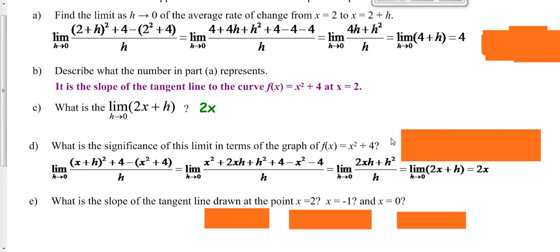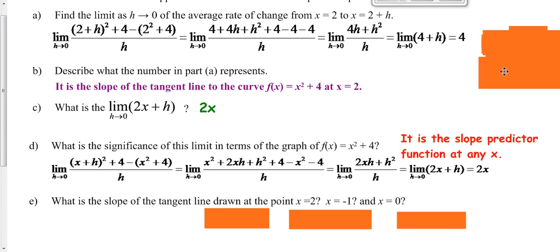Is really the slope of our tangent line anywhere along this curve. It's our slope predictor function.